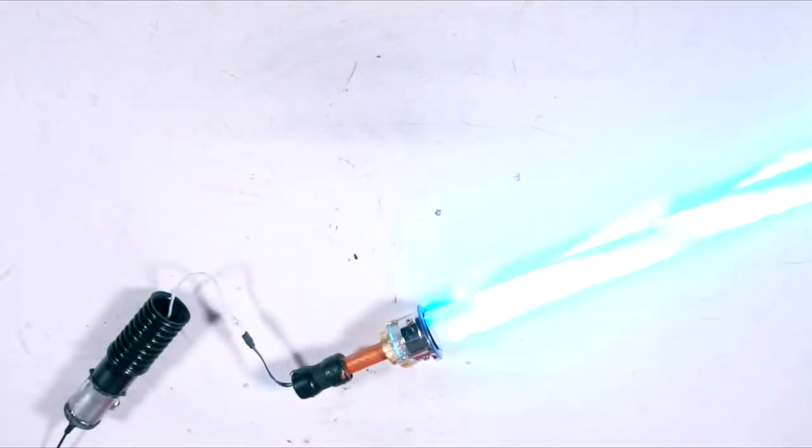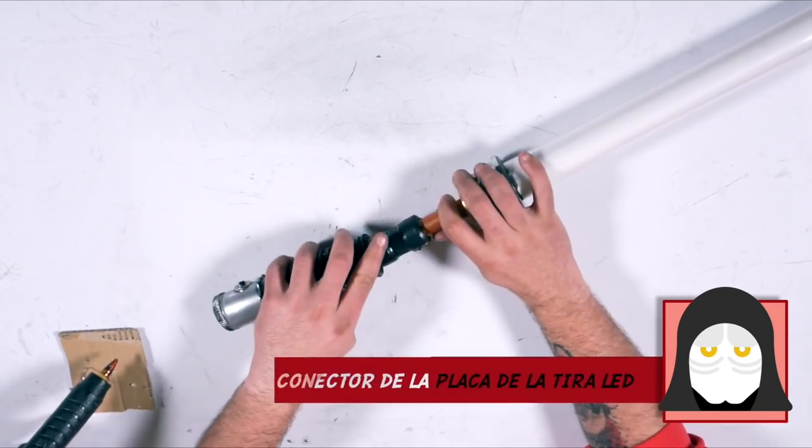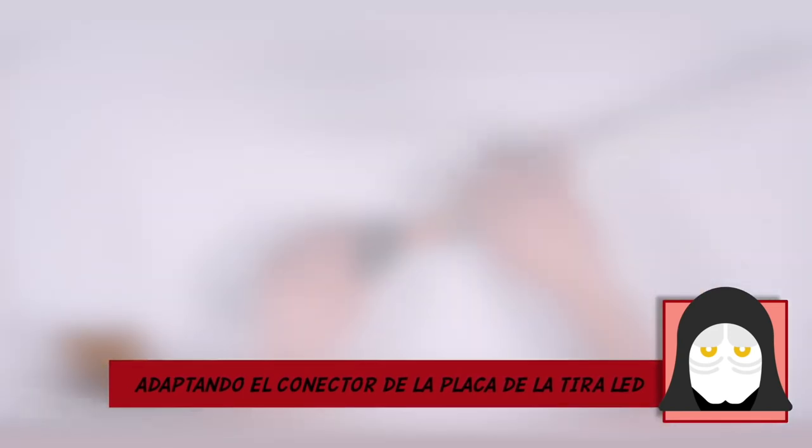Now that the blade is finished, use some screws to join it to the sword hilt. Do you remember the piece that we put inside the hilt? Now it's time to connect it to the LED light and see if it works. With the strength of a true Jedi, join both pieces together.